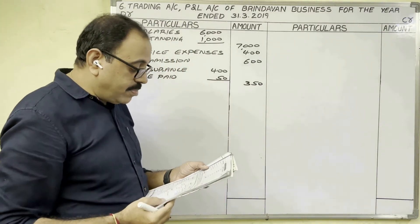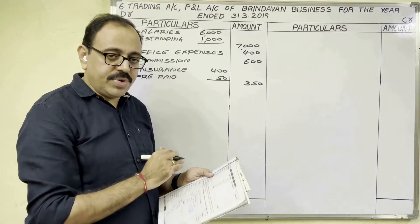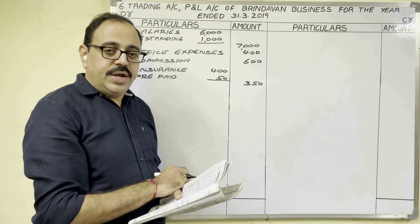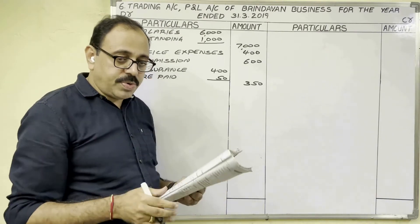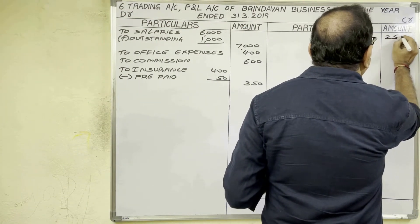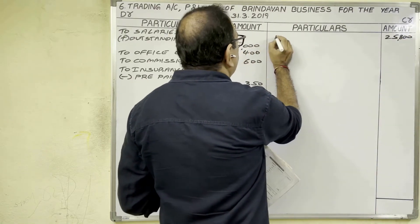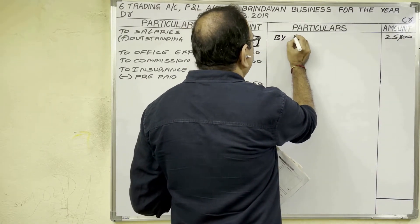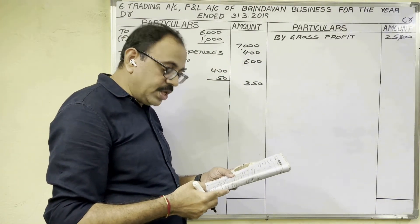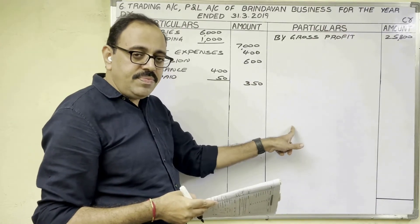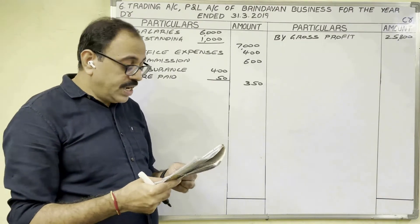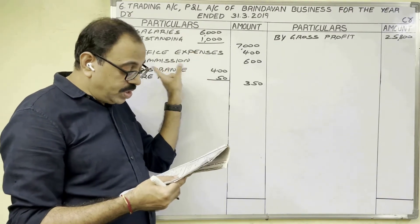Bank balance, bills receivable, and cash complete the debit column. Now on the credit side of P&L account, we bring gross profit of 25,800 rupees from the trading account. Looking at the credit column — sales, creditors, capital, bills payable — there is no other indirect income. Outstanding wages and outstanding salaries adjustments are already completed. Prepaid insurance is also completed.